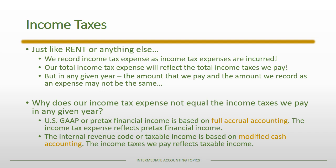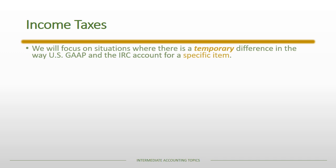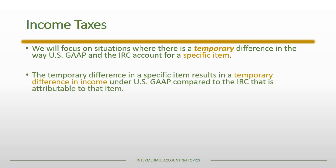We'll focus on situations where there is a temporary difference in the way US GAAP and the Internal Revenue Code account for a specific item, like depreciation or revenue. Whenever we talk about income taxes and these temporary differences, each specific item or difference is a separate issue to analyze. The temporary difference in a specific item results in a temporary difference in income under US GAAP compared to the Internal Revenue Code.